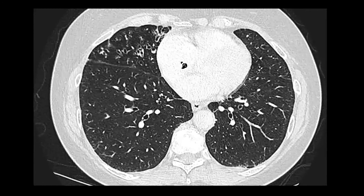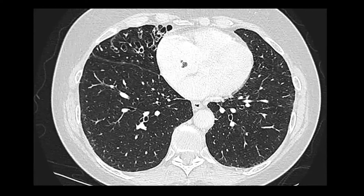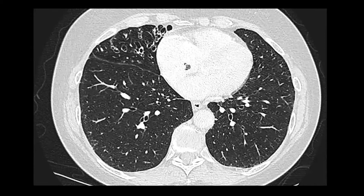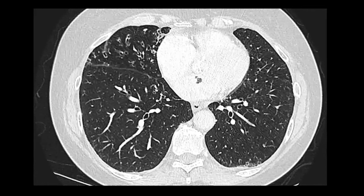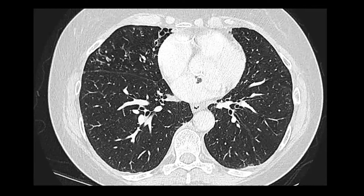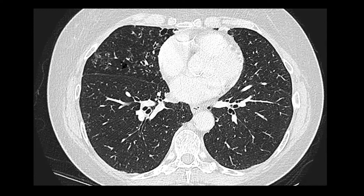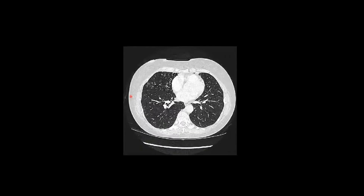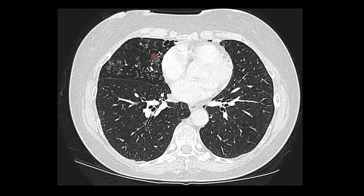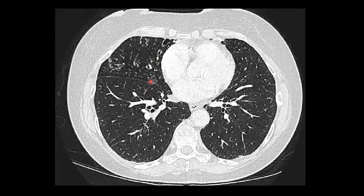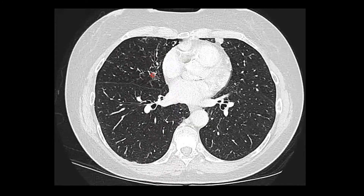There is evidence of bronchiectasis in the right middle lobe and in the lingular segment of the left upper lobe, with tiny nodular infiltrates in the centrilobular distribution involving the right middle lobe and the lingular segment of the left upper lobe. The right side is involved more compared to the left side. There is no evidence of any consolidation, cavitation, or effusion.